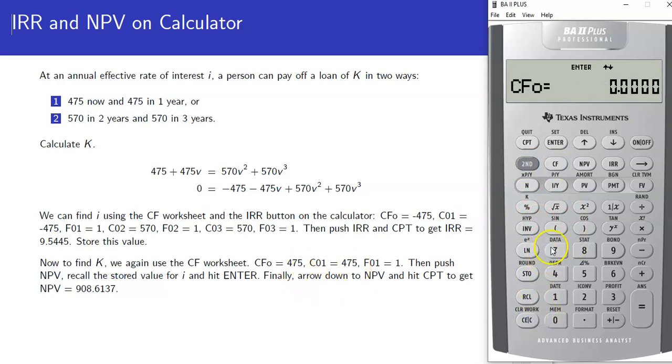We've got cash flows of 475 at time zero and 475 at time one. Now go to our net present value functionality. We're going to recall the stored interest rate and put that in for I. Scroll down to NPV and hit compute, and it gets us a net present value of 908.61.